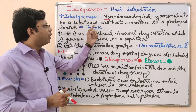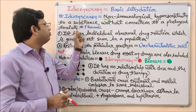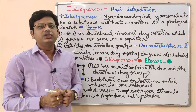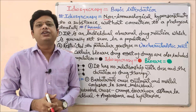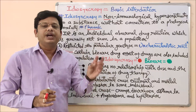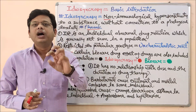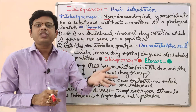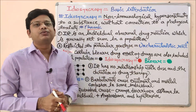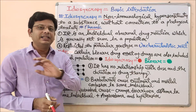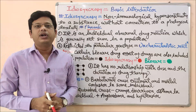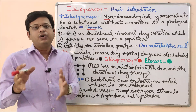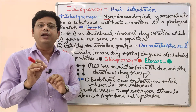Moving to the next part of the definition: idiosyncrasy has no connection to any pharmacological toxicity, specifically the pharmacodynamic profile. Pharmacological toxicity is based on the nature of the drug, its dose, and its duration of therapy. If someone has an unwanted effect just because of the pharmacological profile, that is normal toxicity. But in idiosyncrasy there is no such relationship with the pharmacological or pharmacodynamic profile.